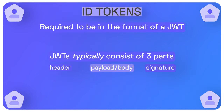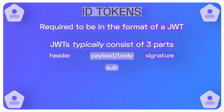Inside of the payload or the body of a JSON web token, you'll have several different claims or pieces of information. You might have a sub property, which is a unique identifier for a user. You might have an audience, which is basically who the intended receiver is to use this ID token — this will be important, we'll come back to this in a second. You might have the issuer, the identity provider who created the token, and you might have the name or other pieces of information about the user themselves.